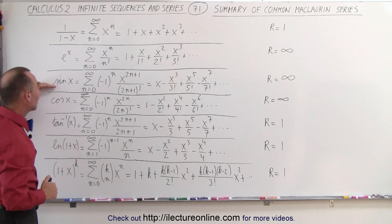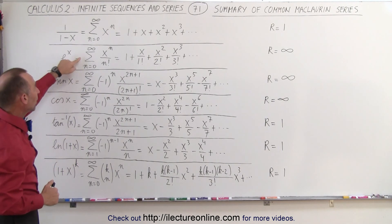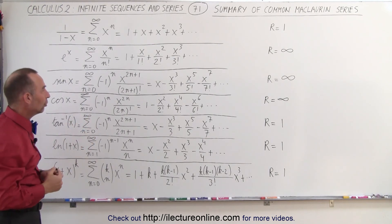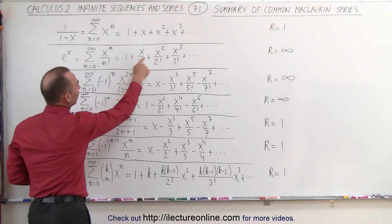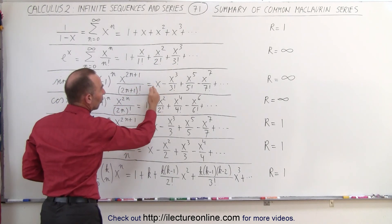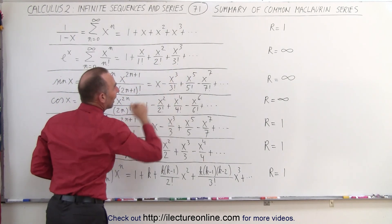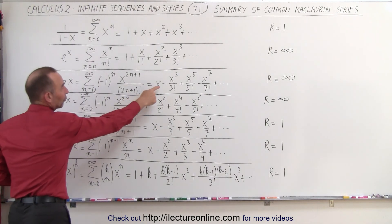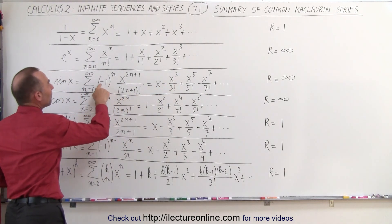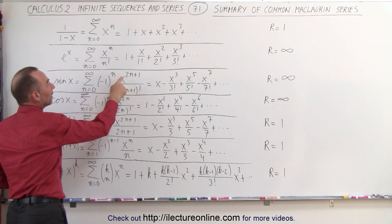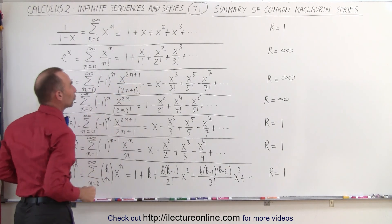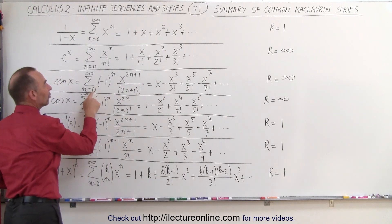Now the sine of x is similar to what we have over here, except we skip every other term, so we don't have the first term, the second term, the fourth term, and so forth. So notice we only have odd exponents of x. To accomplish that, and also the alternating signs, we have minus 1 to the n power times x to the 2n plus 1 divided by 2n plus 1 factorial, starting with n equals 0.